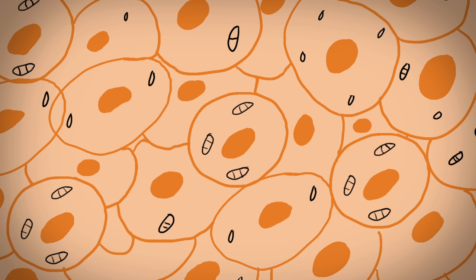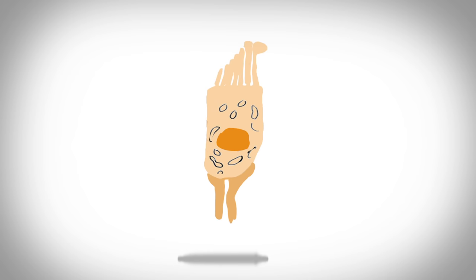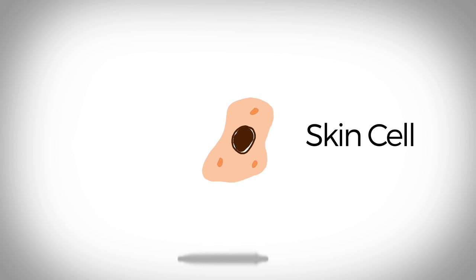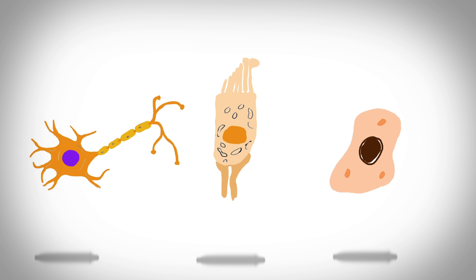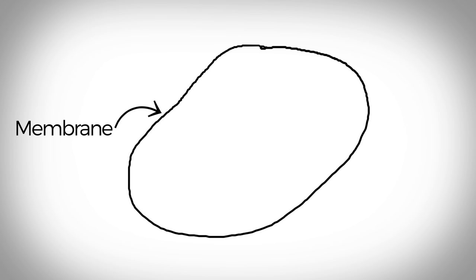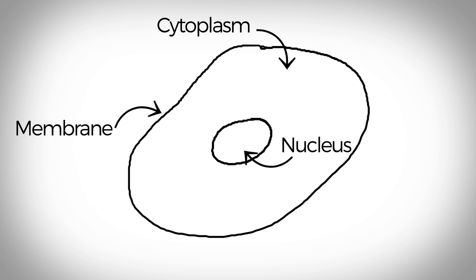There are many different types, like nerve cells, and hair cells, and skin cells. They all have different shapes and forms, but every cell has the same basic parts. The cell has an outer border called the membrane, which contains a liquid material called cytoplasm. In the cytoplasm is the nucleus, and inside the nucleus are chromosomes.